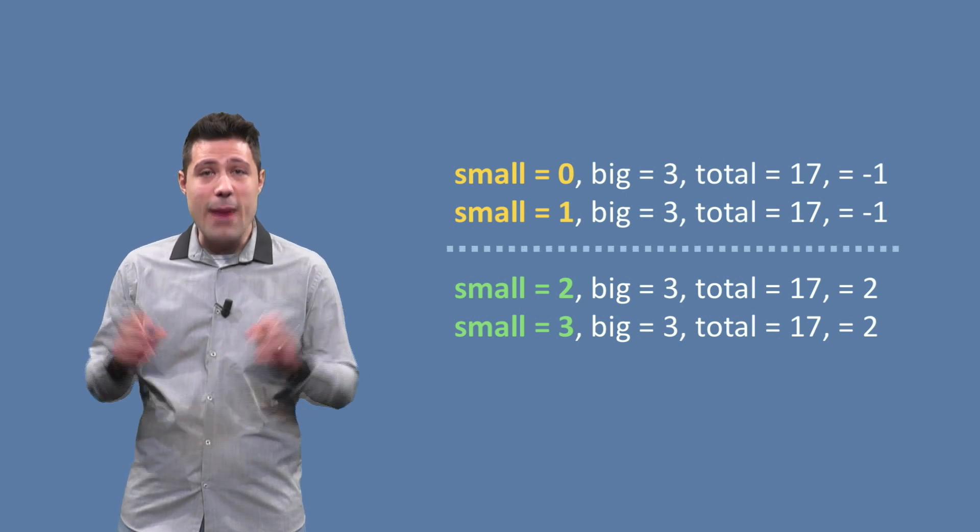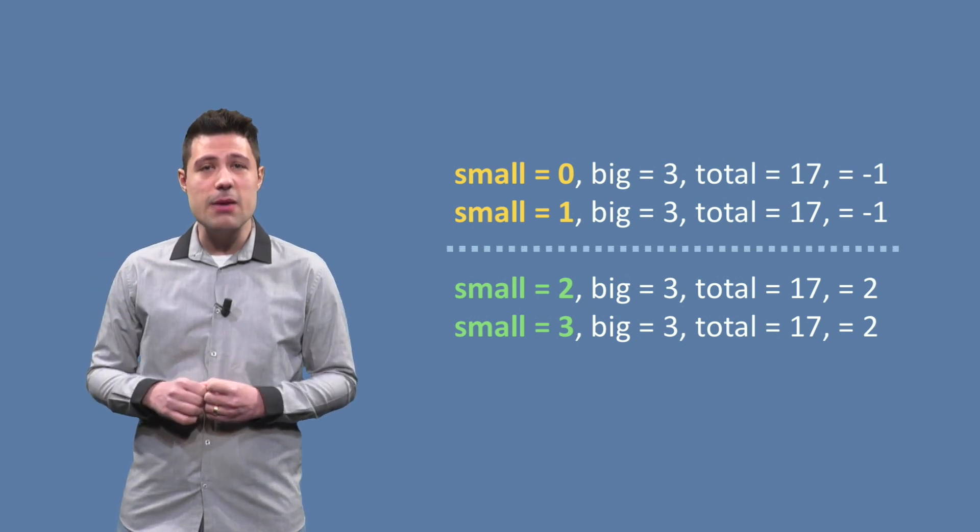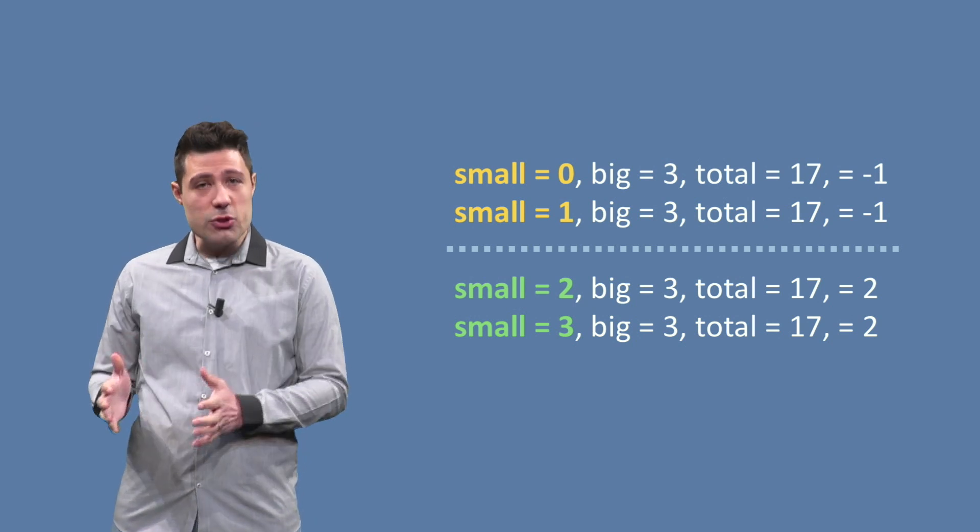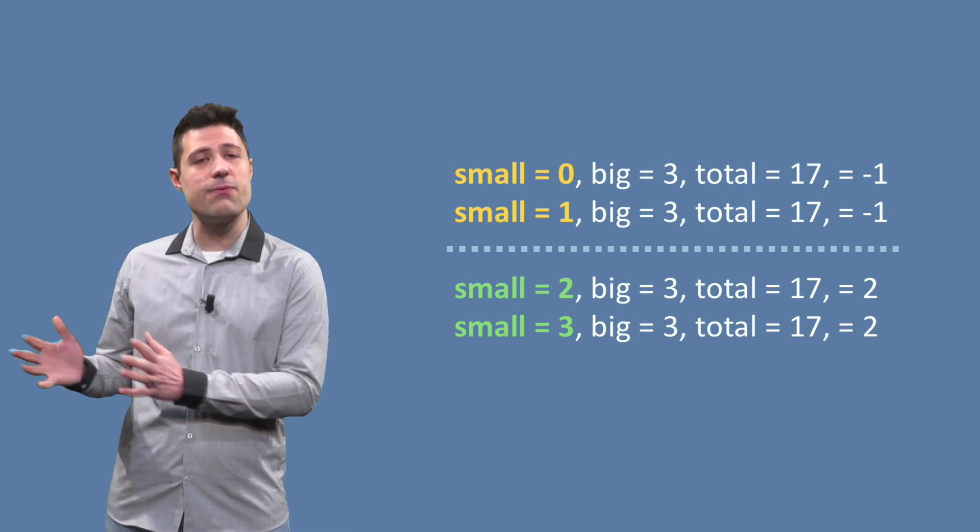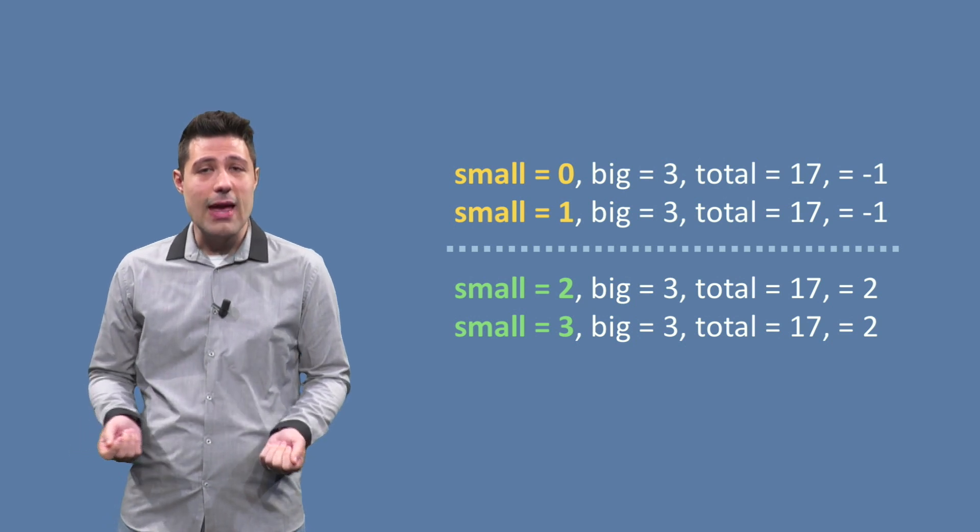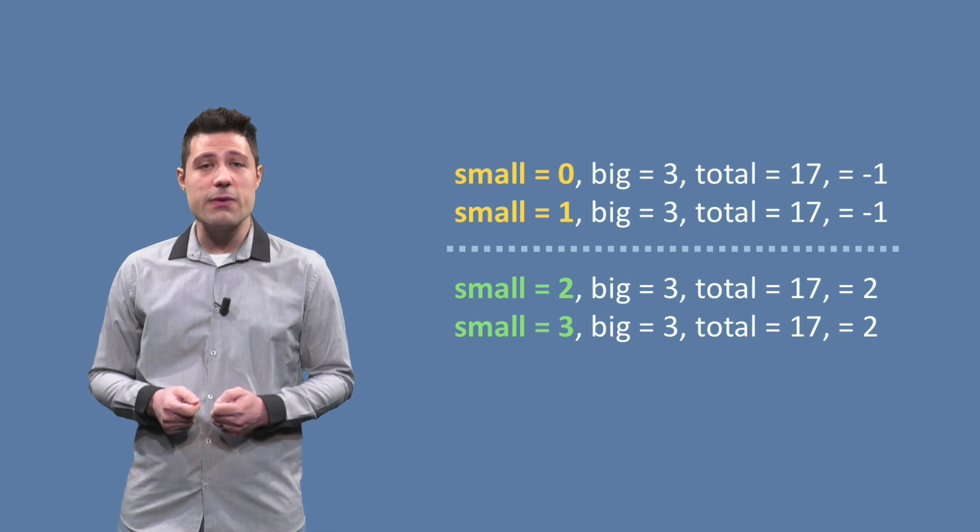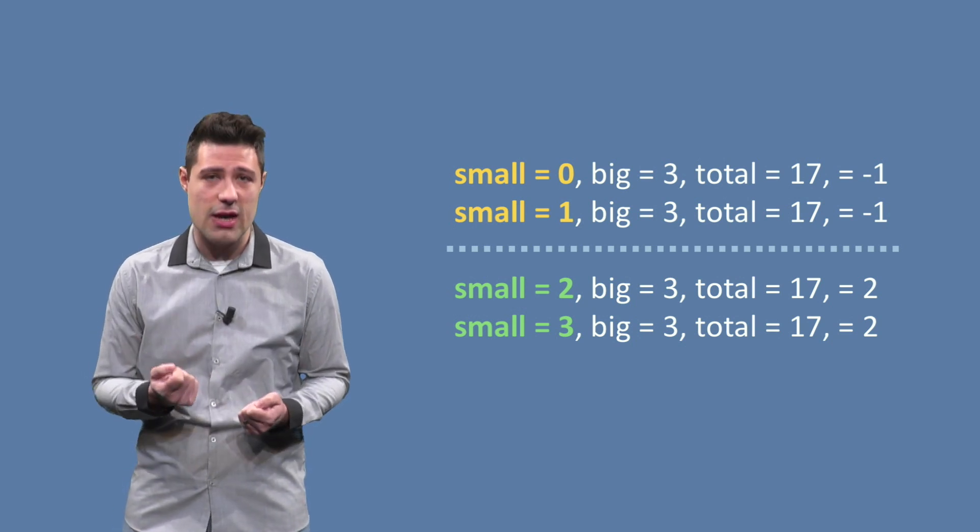As you can see, there is a boundary which separates the inputs in which small is 0 and 1, to the inputs where small is 2, 3, 4, etc. And these boundaries are a very common area for bugs. Developers often forget to correctly deal with such cases.